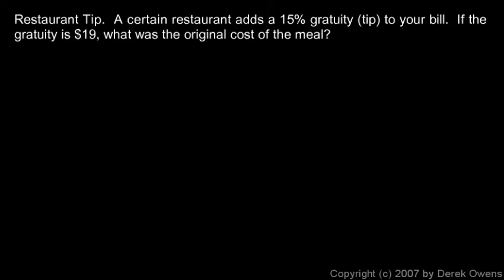This example involves paying a tip at a restaurant. If you go to a restaurant and eat, you typically add a little bit extra to the cost of your meal that goes to the waiter, especially if they've given you good service. In this case, the restaurant automatically adds a 15% gratuity — which just means tip — to your bill. If the gratuity is $19, what is the original cost of the meal?